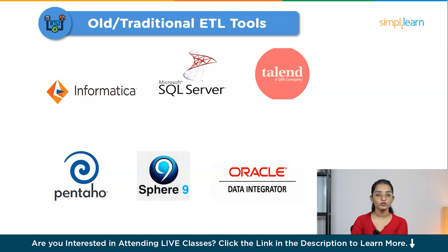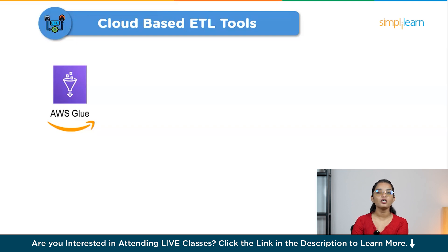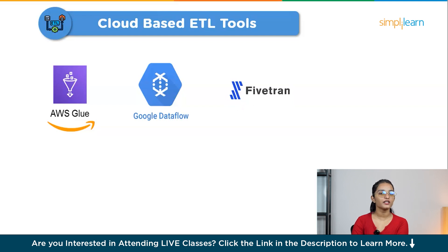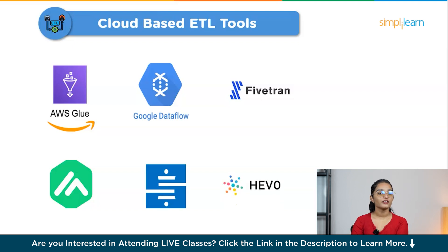Cloud-based ETL tools are designed for cloud-based environments, offering scalability, flexibility, and integration with cloud data warehouses — perfect for businesses transitioning to or already operating in the cloud. Common tools include AWS Glue, a serverless ETL tool by Amazon for preparing and loading data for analysis; Google Cloud Dataflow, a real-time ETL tool for processing large datasets on Google Cloud; Fivetran, a simple automated ETL tool that quickly sets up data pipelines with minimal effort; Matillion, a cloud-native ETL tool integrating easily with AWS, Azure, and Google Cloud; Stitch, for moving data to your data warehouse quickly; and HevoData, a no-code ETL tool for automating data integration across cloud platforms.